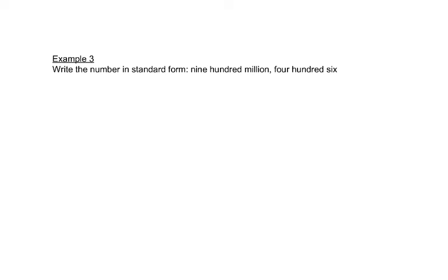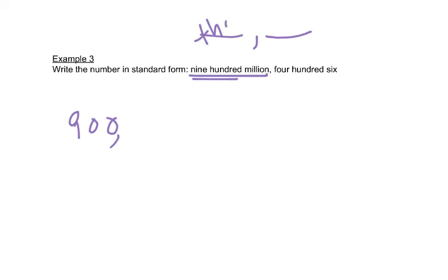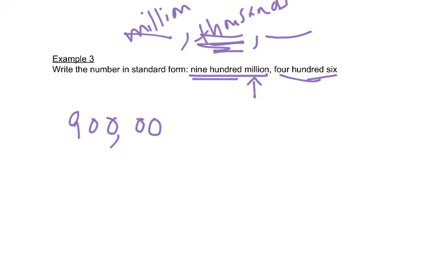Now we're going the other way — converting words to numerals. It says nine hundred million. We look at the nine hundred and write that number. The word million is going to be represented by a comma. Remember how the groupings go: ones, tens, hundreds, then the thousands group with a comma, then the millions group. Since it goes to the millions and there's nothing else except four hundred and six, we have to hold the thousands spot with three zeros. So we have zero, zero, zero, and then four hundred and six. That's how we write that number.